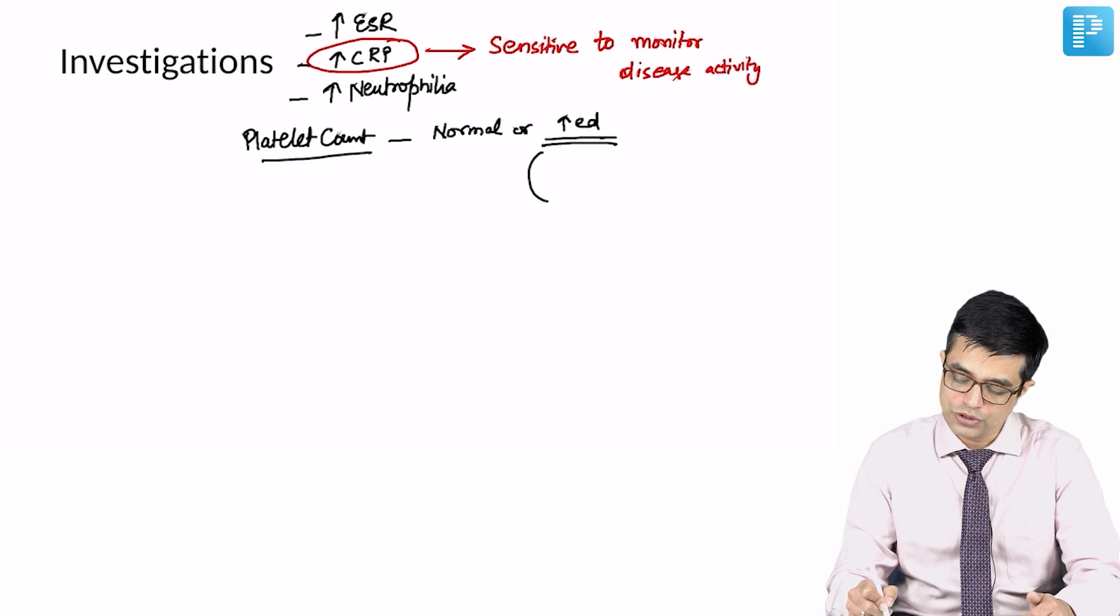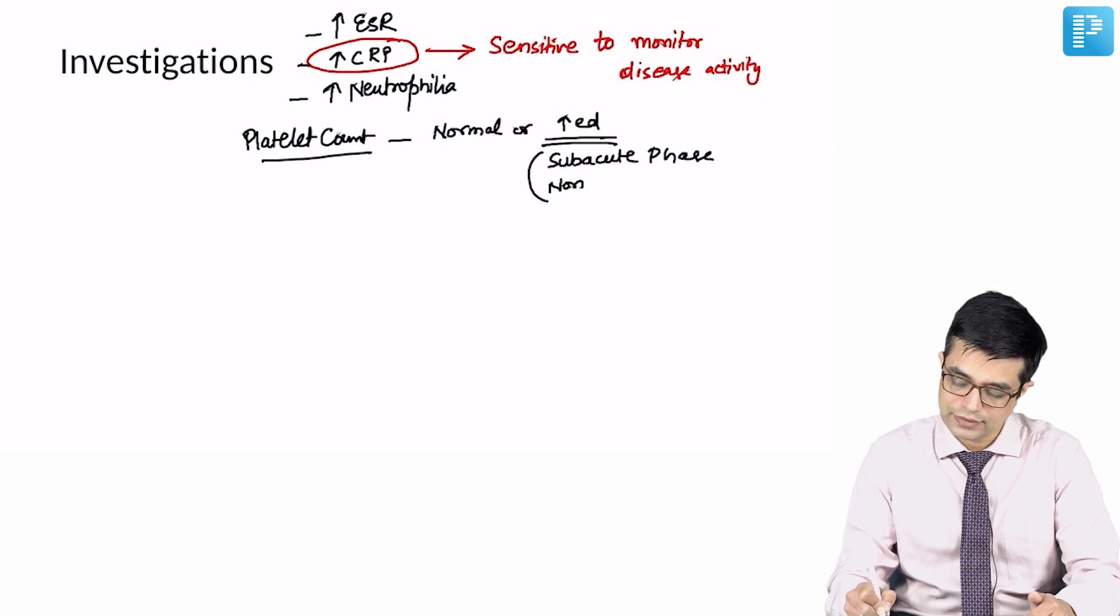The elevation in platelet count usually begins in the subacute phase, beyond the second week of illness, and tends to normalize in around 6 weeks.